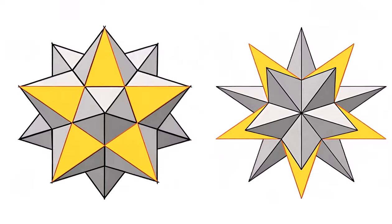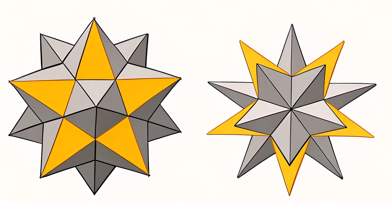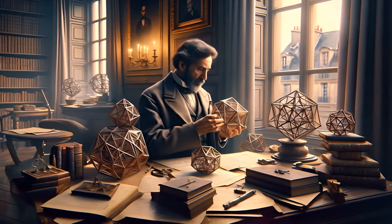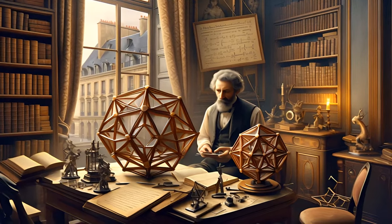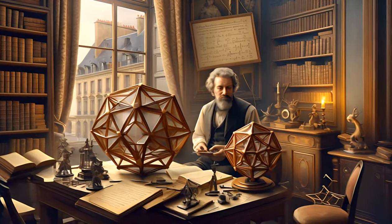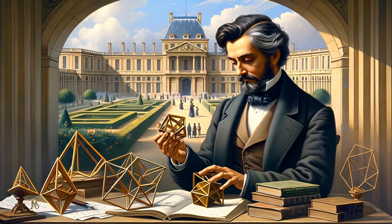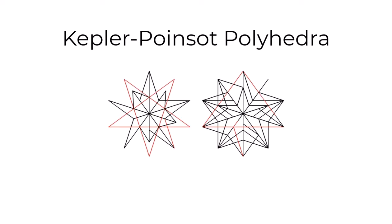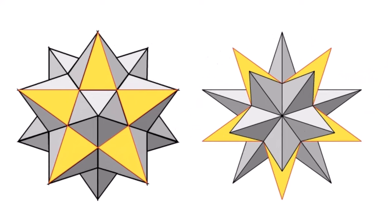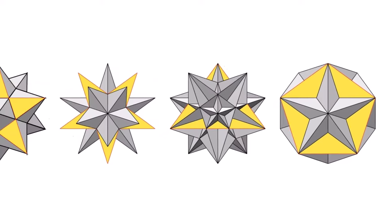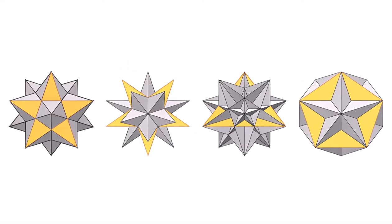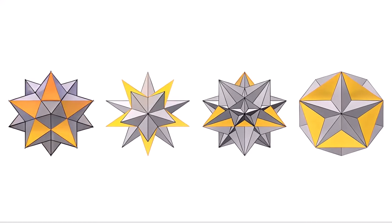Kepler, in his continued exploration of shapes, introduced two unique polyhedra to the world. Following in his footsteps, Louis Poinsot, a 19th century French mathematician, furthered these discoveries by revealing two additional shapes, significantly advancing geometric understanding. Collectively known as the Kepler-Poinsot polyhedra: the small and great stellated dodecahedra, and the small and great rhombicuboctahedra — shapes known for their intricate symmetry and remarkable complexity, diverging from classic Platonic solids and extending geometric understanding.